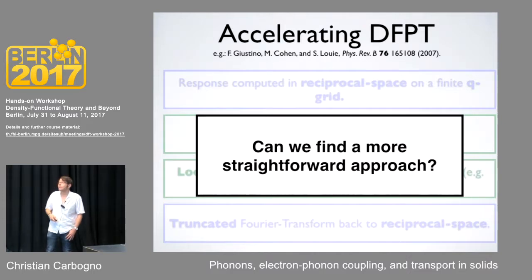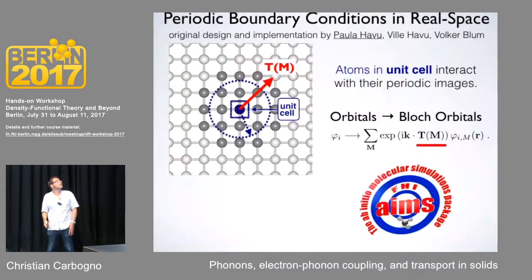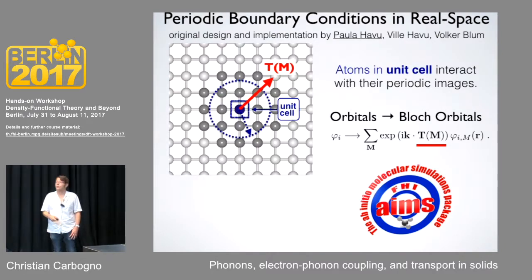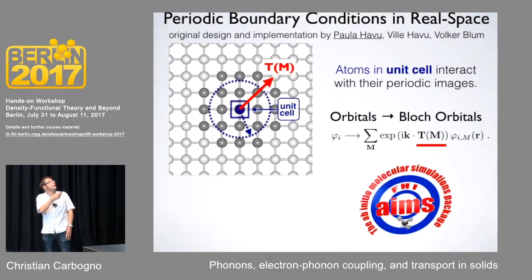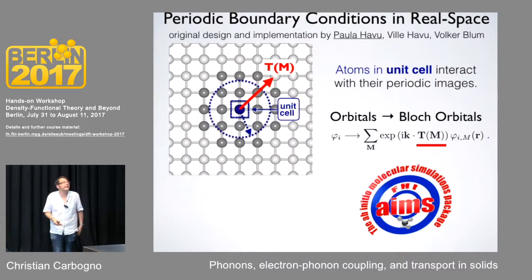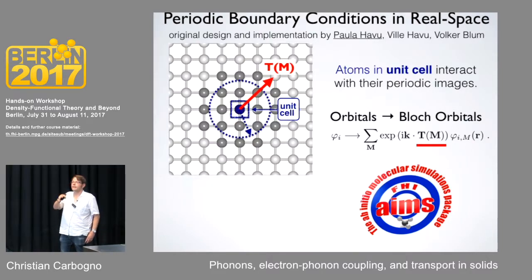You can also use a more straightforward approach and treat everything in real space. This is an example of how it is done in FHI-aims, where real space is used by default for all computations. I don't want to go into too many details, but showing you how periodic structures are built within the internals of FHI-aims gives you an idea of the bottlenecks.